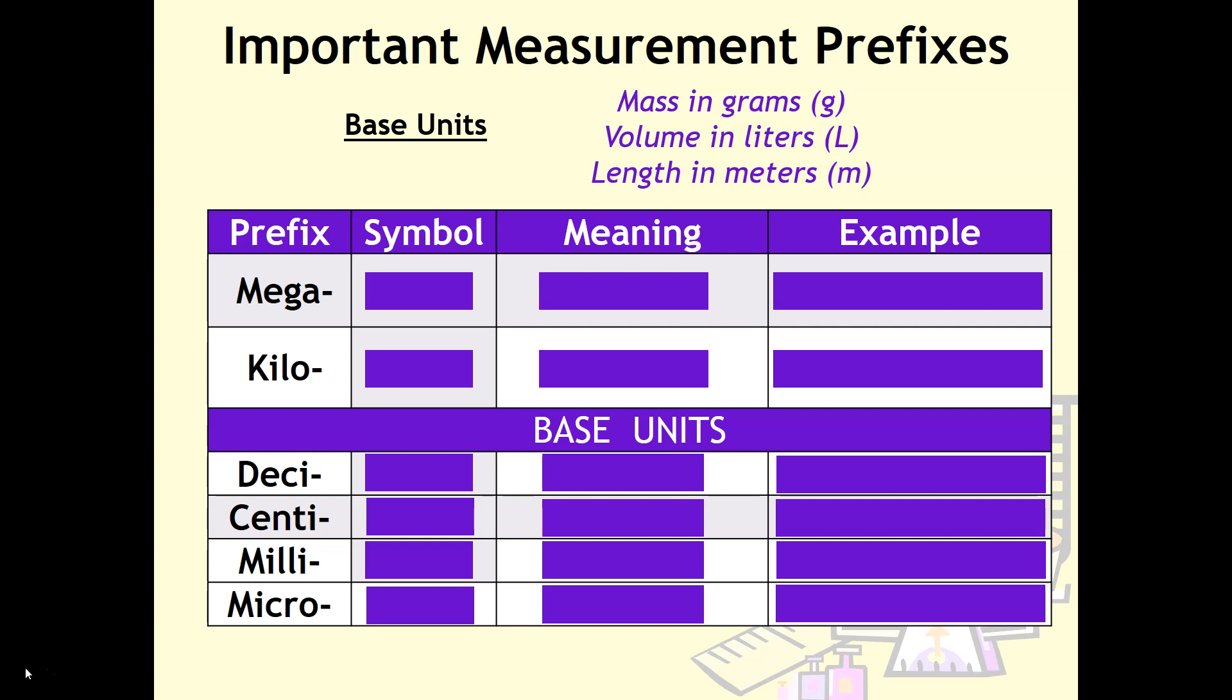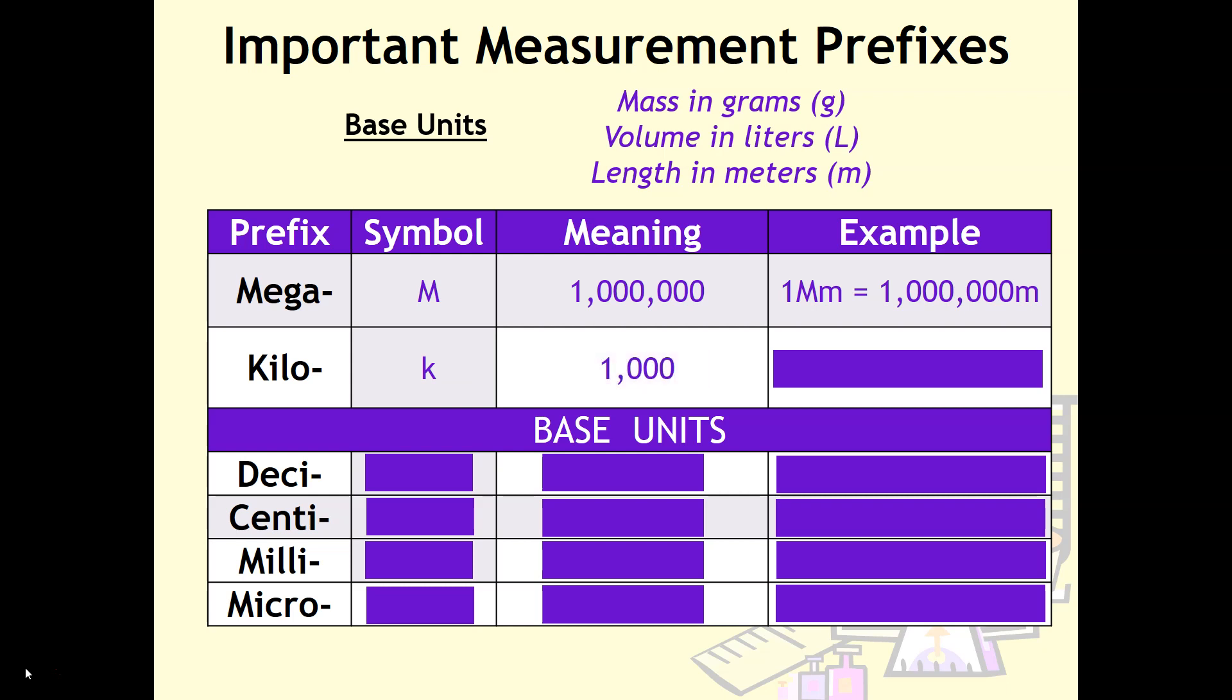Let's talk about some major prefixes. The first is mega, with the symbol capital M, meaning one million. For example, one megameter equals one million meters. Next is kilo, with the symbol lowercase k, meaning 1,000. For instance, one kiloliter equals 1,000 liters. Notice I used meters and liters as base units. Remember, these base units are interchangeable. So whether it's kiloliters, kilograms, or kilometers, kilo still means 1,000.